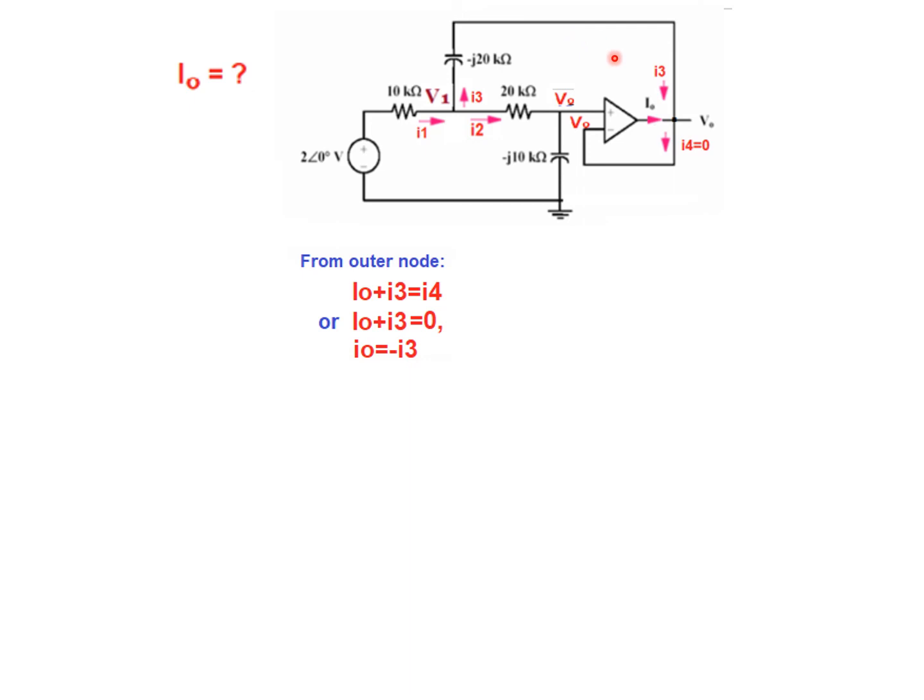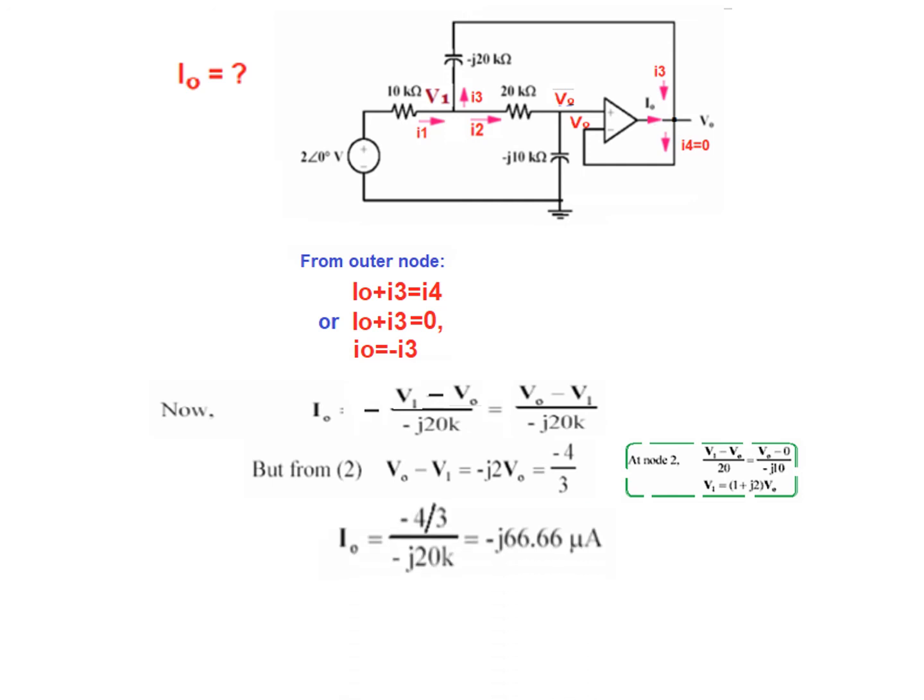If you can find minus I3, that will be the answer. I0 is minus I3. And minus I3 is V1 minus V0 divided by minus J20. And so, this is I0. And now, we will put the values of V0 and V2. From equation number 2, this was the relation from equation number 2. Putting the values here, we get I0 equals to V0 minus V1. This whole we replace by minus 4 over 3 divided by minus J20.